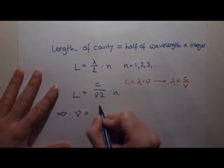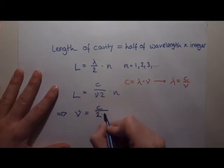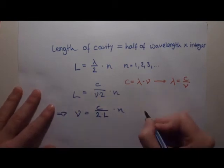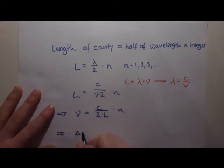Can we say anything about the distribution of the frequencies then? Yes, we can. Apparently they should be equally spaced due to the fact that they are discrete. So we can derive an expression for the frequency distance.